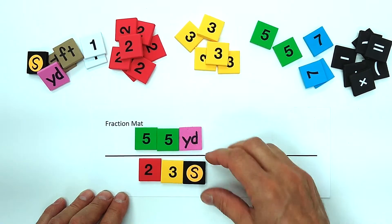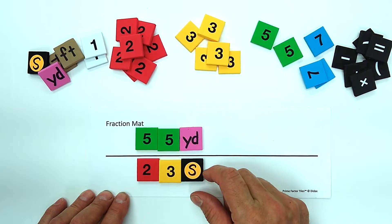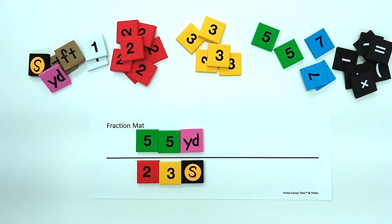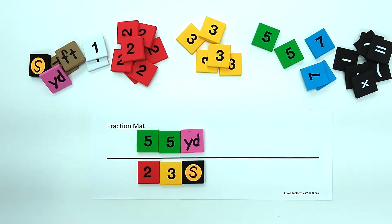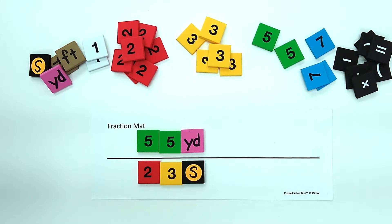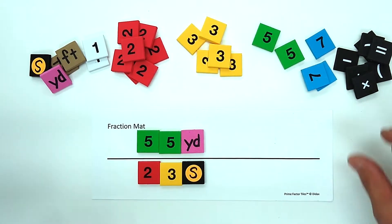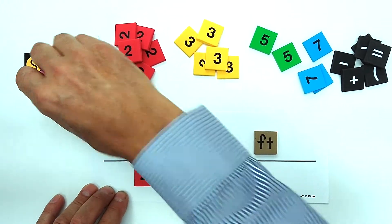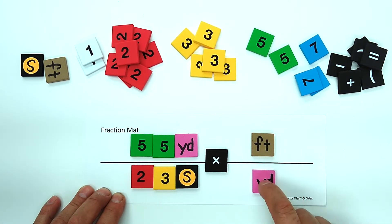In order to convert from yards per second to feet per second, I need to eliminate yards and introduce feet. I'm going to use the same concept that we do with prime factor tiles, where tiles above and below the fraction bar cancel each other out. So if I multiply by the number of feet per yard, I'll end up introducing feet and eliminating yards, and that conversion factor is 3 feet per one yard.